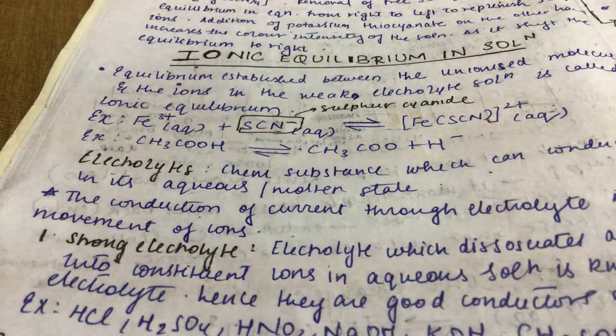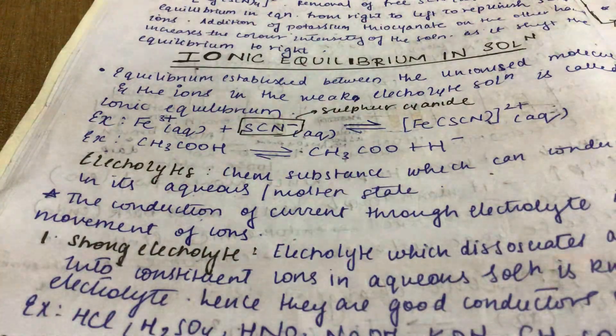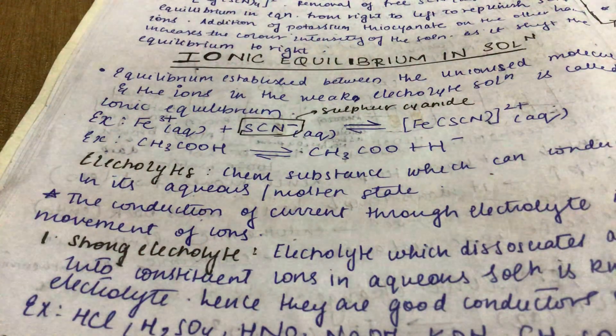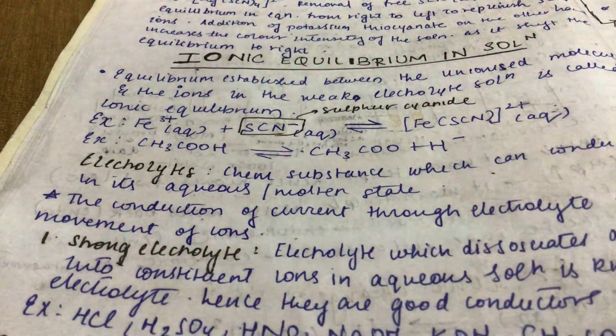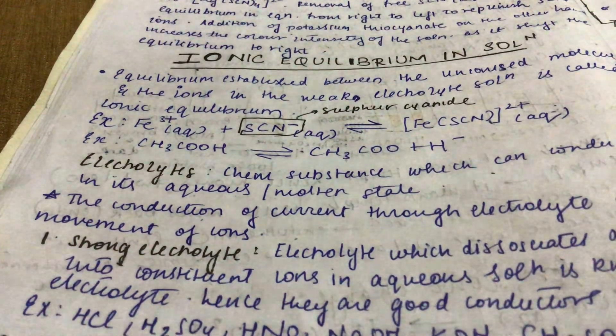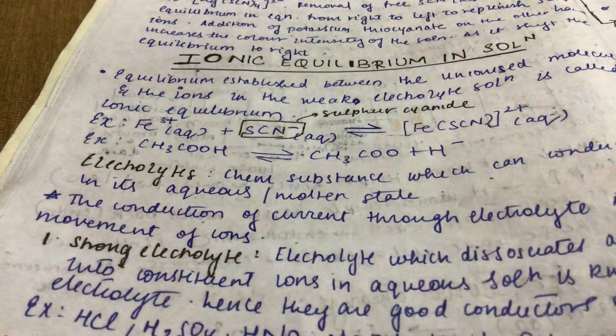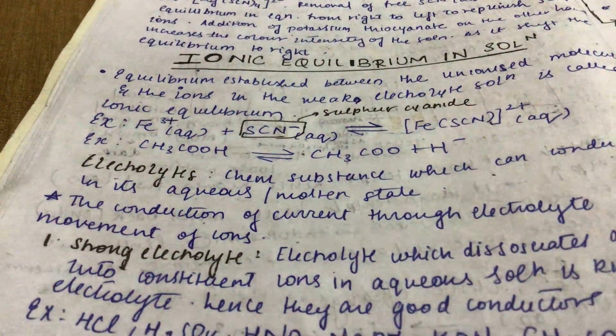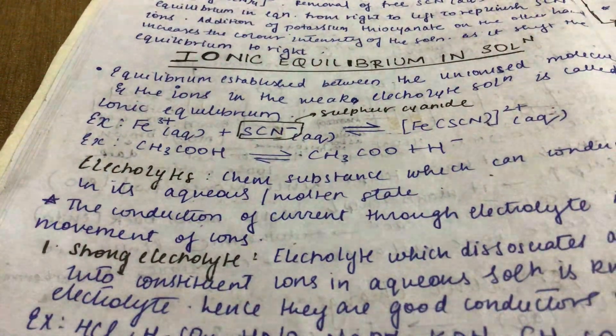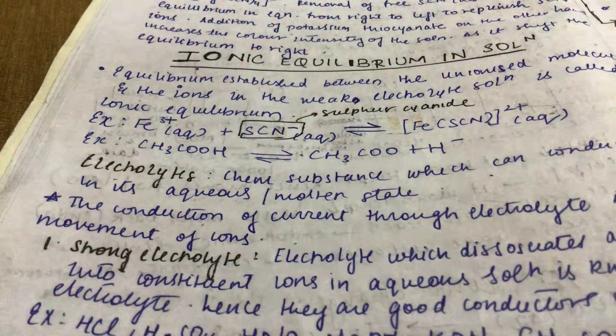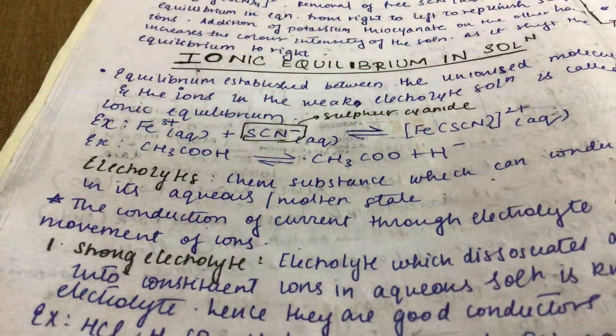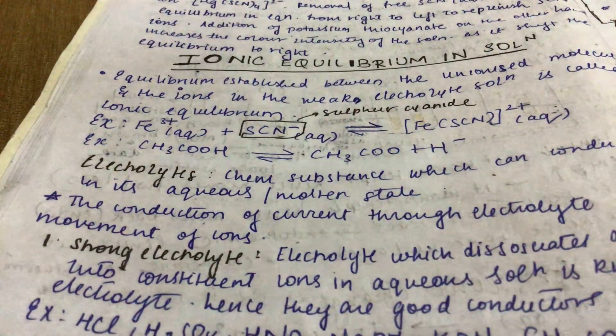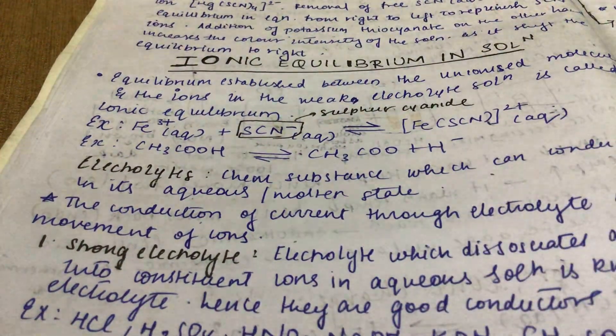Weak electrolytes are compounds which ionize partially in aqueous solution and are poor conductors of electricity. Examples: all organic acids except sulfonic acid and bases like NH3, CH3COOH. Only weak electrolytes participate in ionic equilibrium. Compounds which don't conduct electricity are known as non-electrolytes.